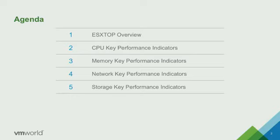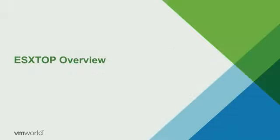Just like the name of the session says, we're going to go through all four of the main performance things you would need for a virtual machine: CPU, memory, networking, and storage. Sometimes I call them the four food groups because that's essentially what it is. So let's start off with ESXTop.